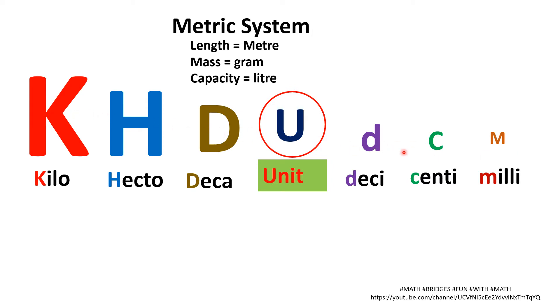K, H, D, U. If you see the size, I have decreased. That means the value of this decreases as we are going like this. And unit means it is basic unit: meter, gram and liter.